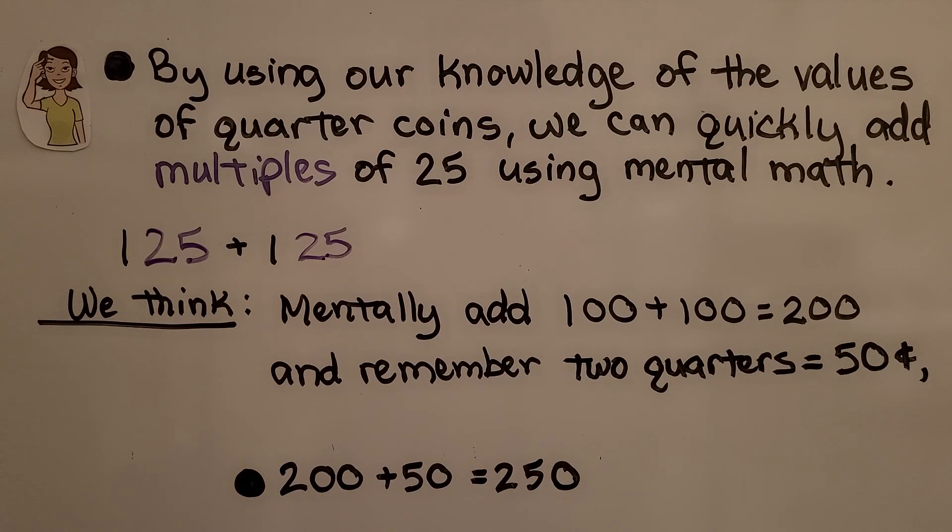By using our knowledge of the values of quarter coins, we can quickly add multiples of 25 using mental math. If we need to add 125 plus 125, we think. Mentally add 100 plus 100, which is equal to 200. And remember that two quarters is equal to 50 cents. We have 200 plus 50 is equal to 250.